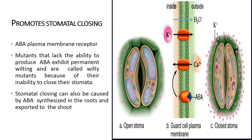Stomatal closing: whenever abscisic acid binds to the guard cell receptors present on the plasma membrane, it leads to the entry of calcium ions and exit of potassium ions. Mutants that lack the ability to produce ABA exhibit permanent wilting and are called wilt mutants due to their inability to close stomata. Stomatal closing can also be caused by abscisic acid synthesized in the root and exported to the shoot.